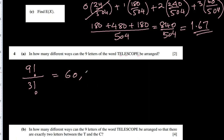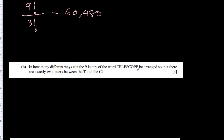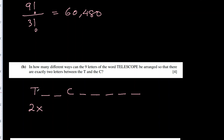That gives 60,480 different ways. Next: in how many ways can the nine letters of TELESCOPE be arranged so that there are exactly two letters between T and C? T then two spaces then C takes four positions, leaving five remaining spaces. It's also possible to have C first and T later, so multiply by two. We have seven blank spaces arranged in 7 factorial ways, but three E's remain so divide by 3 factorial.